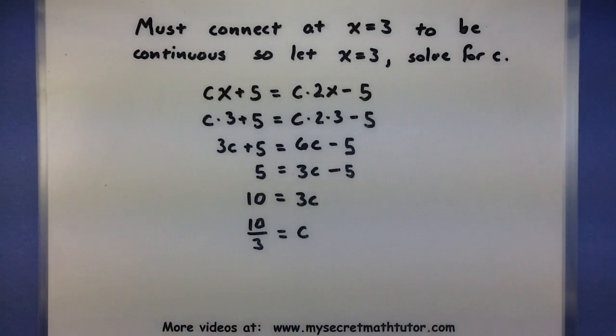Alright, so according to our work, it looks like if we choose a c value of 10 thirds, these two lines should end up meeting up. And since they meet up, that means we'll be able to draw the entire graph of f without ever having to lift our pencil. Therefore, it will be continuous.